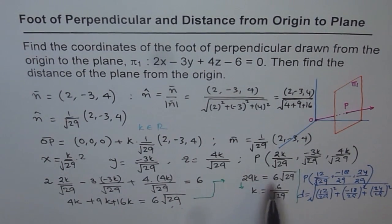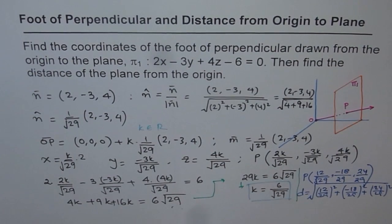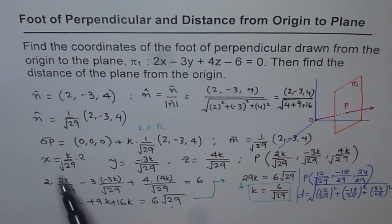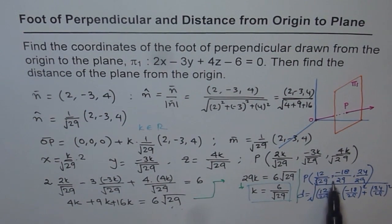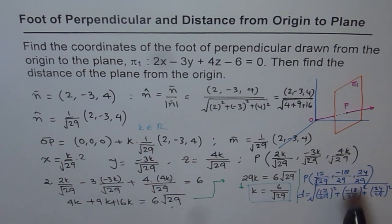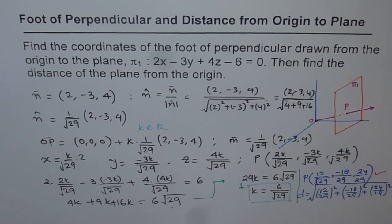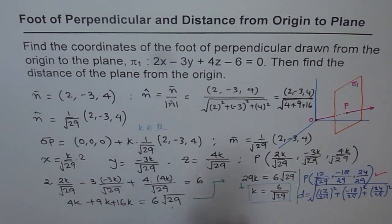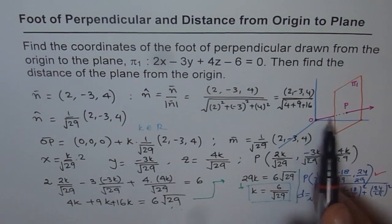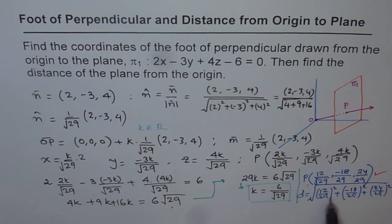Substituting K = 6/√29 into the general point on the line gives coordinates (12/29, -18/29, 24/29) as XYZ coordinates of point P. For the second part — finding the distance from the plane to origin — since origin is (0,0,0), we apply the distance formula: each coordinate squared, summed, then square-rooted.